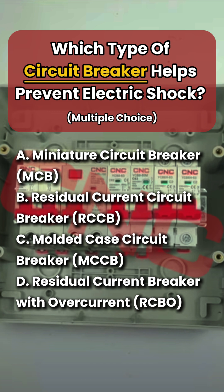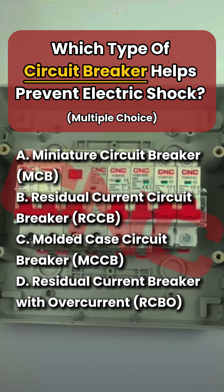Which type of circuit breaker helps prevent electric shock? Multiple choice. B. Residual current circuit breaker, and D. Residual current breaker with overcurrent.